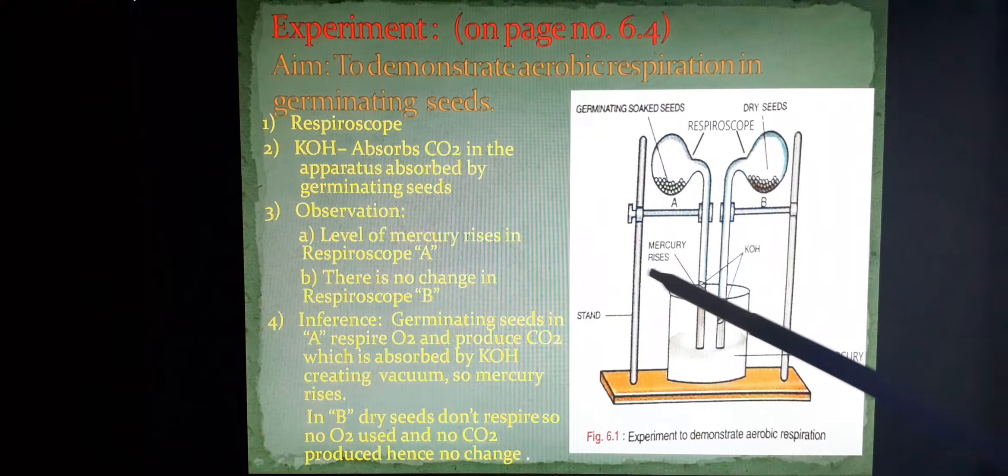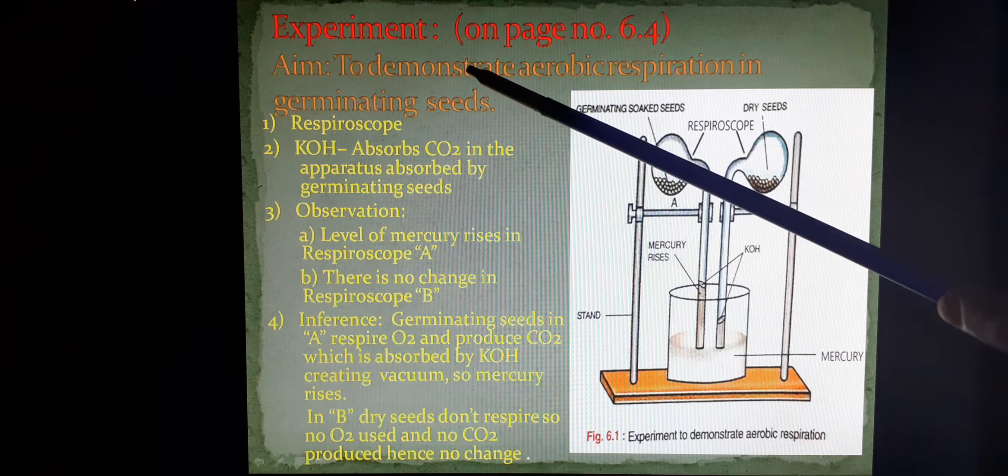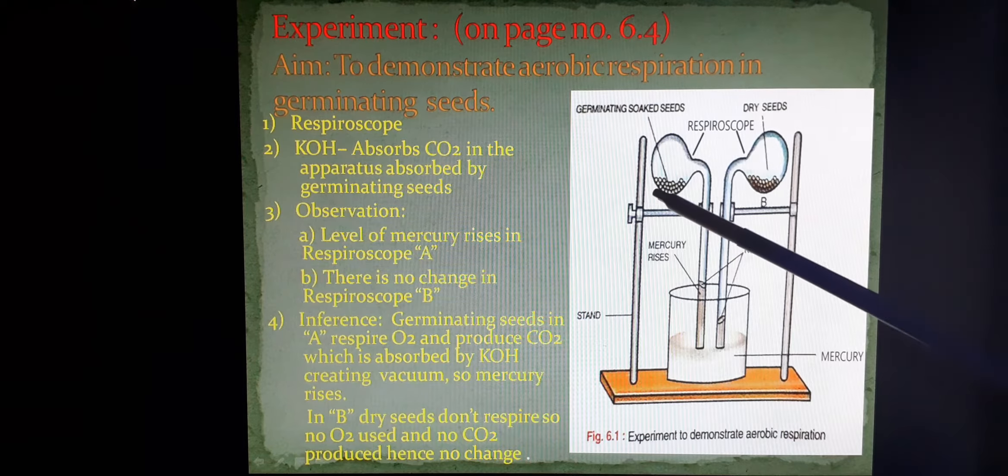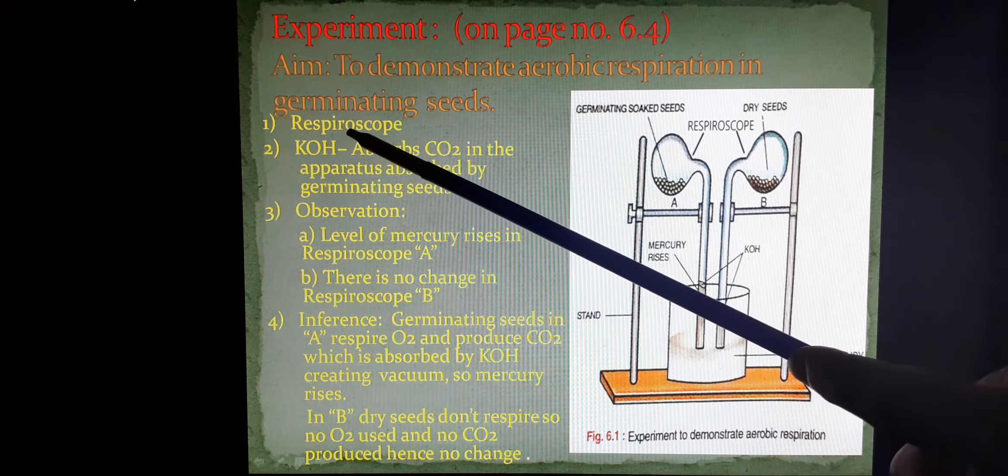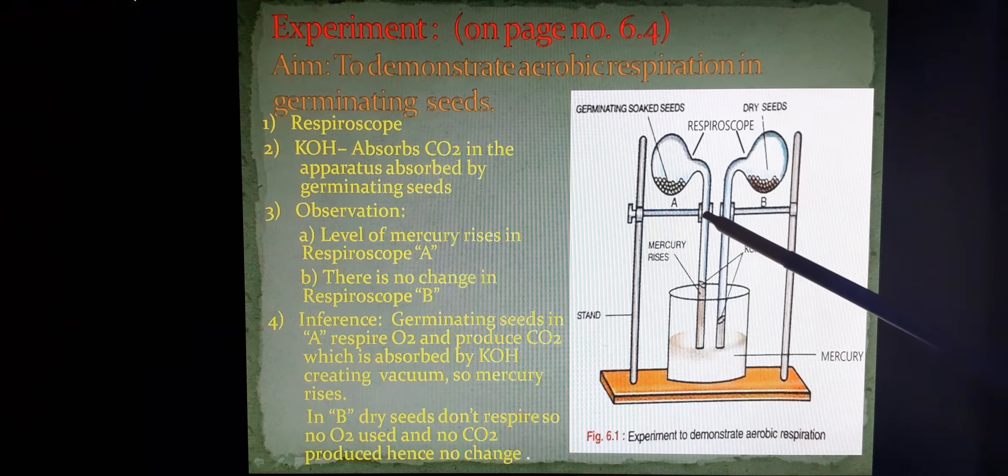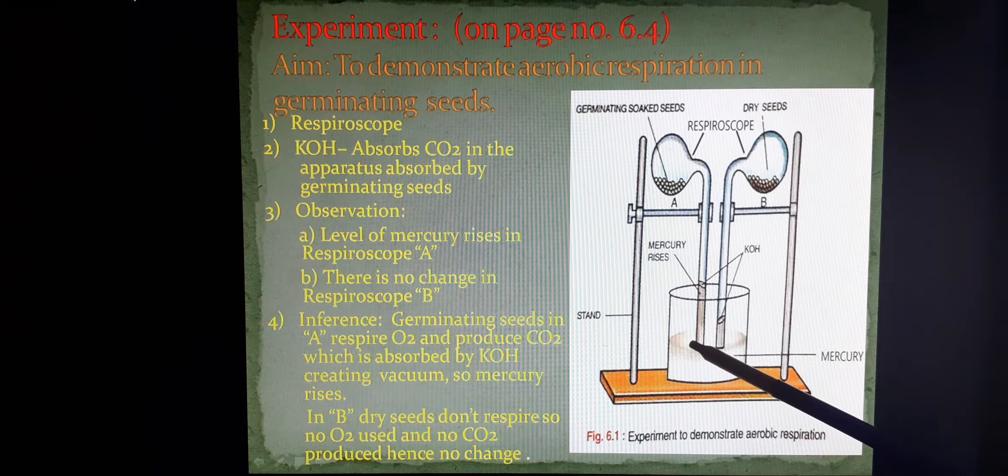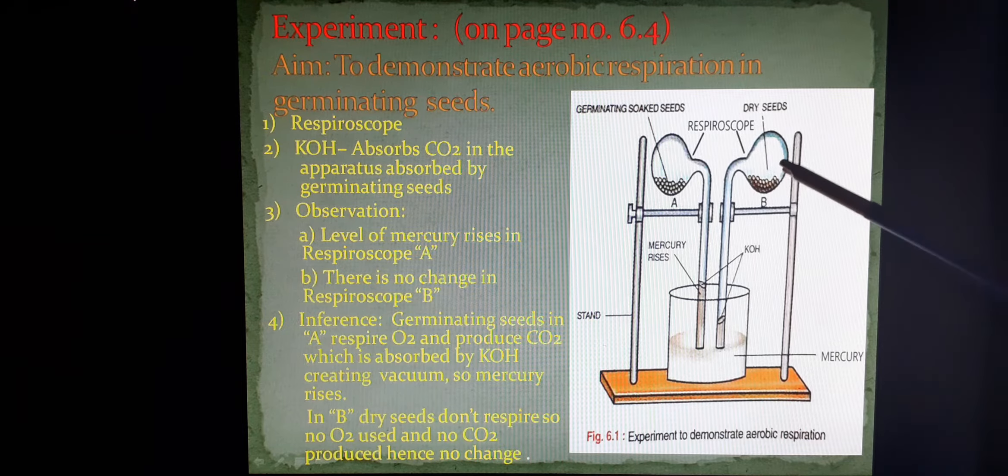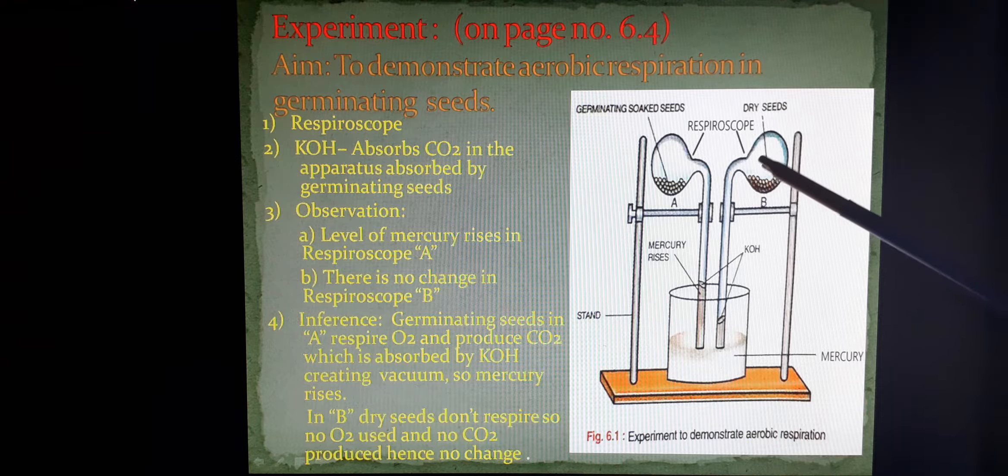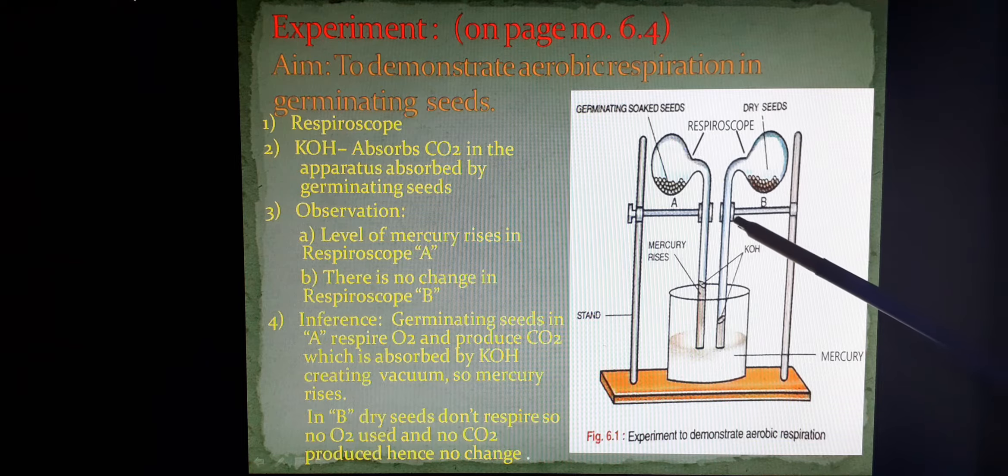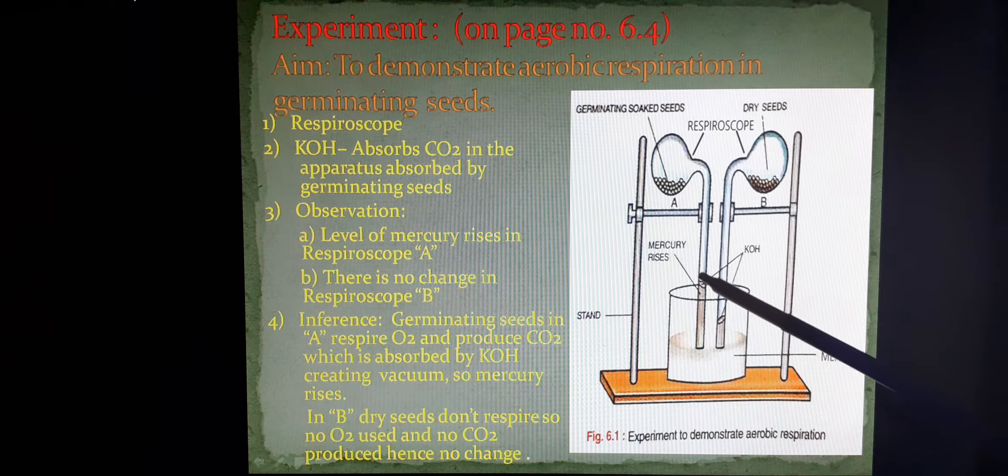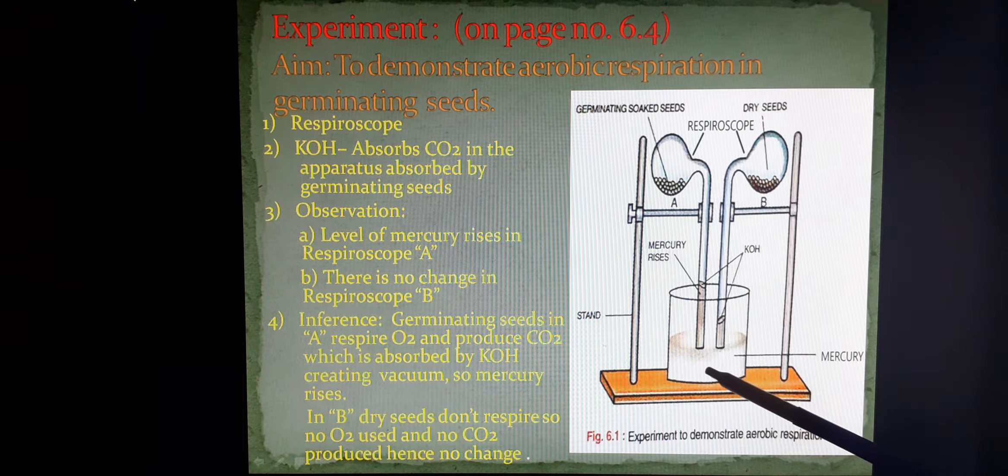To begin with, we start with the first experiment which is demonstration of aerobic respiration through germinating seeds. For this, we have taken a special apparatus called respiroscope, which is a round bulb to which an inverted tube is attached. We have taken two respiroscopes A and B. In A, we have used germinating seeds and in B, dry seeds. The two bent tubes contain potassium hydroxide and are dipped in a beaker containing mercury.